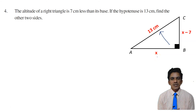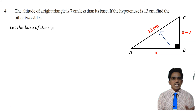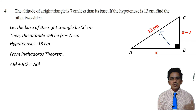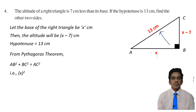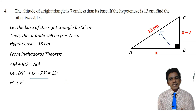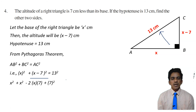For example, if the altitude were 10 more than the base, you would take altitude as x plus 10. Now let us write the information: let the base of the right triangle be x cm, then the altitude will be x minus 7, and the hypotenuse is 13 cm. From Pythagoras theorem, hypotenuse squared equals the sum of the squares of the other two sides: AB squared plus BC squared equals AC squared. Substituting: x squared plus (x minus 7) whole squared equals 13 squared.